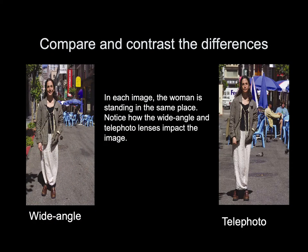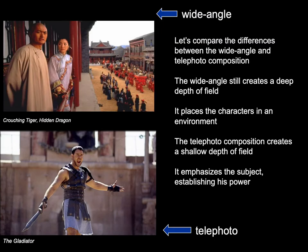Compare and contrast the differences: in each image the woman is standing in the same place — notice how the wide-angle and telephoto lenses impact the image differently. Comparing the wide-angle lens composition from Crouching Tiger, Hidden Dragon with the telephoto composition from Gladiator: the wide-angle lens creates a deep depth of field and places the characters within an environment, while the telephoto composition creates a shallow depth of field and places emphasis on the subject, establishing his power.